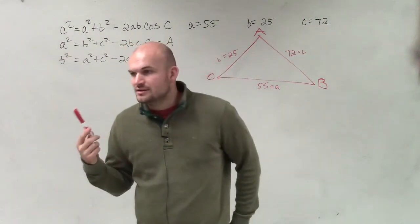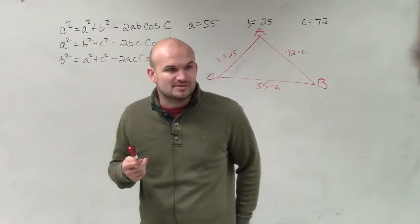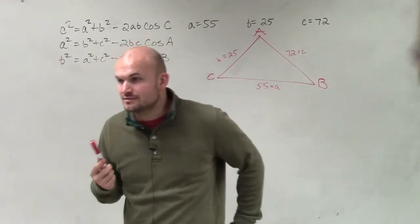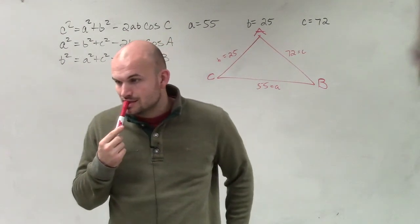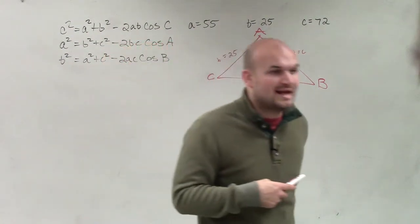However, Samantha, if I am given an obtuse angle, is it possible for me to have another obtuse angle? How many degrees are there in a triangle? 180, right? So if one is already larger than 90, it's impossible if you have another one that's going to be larger than 90.